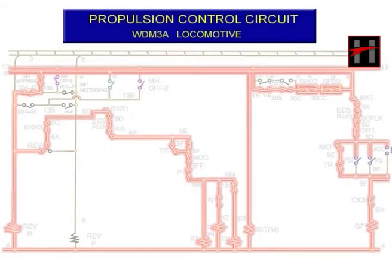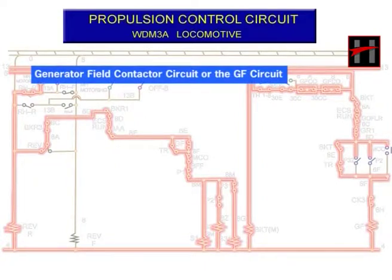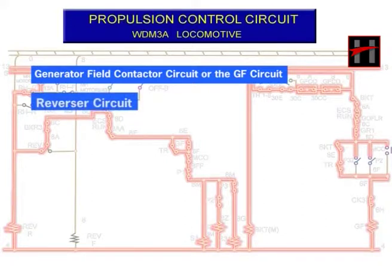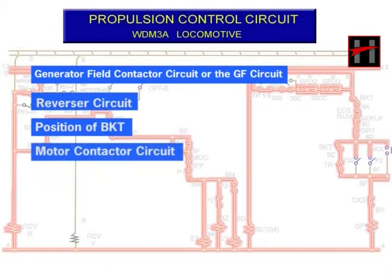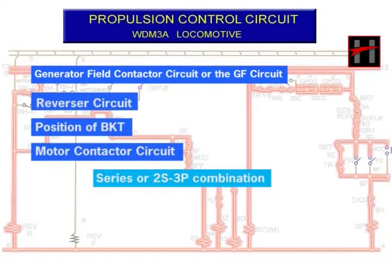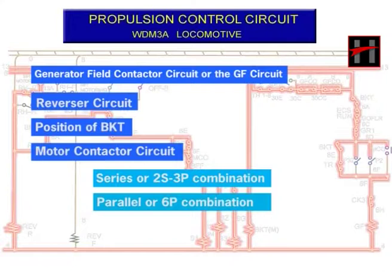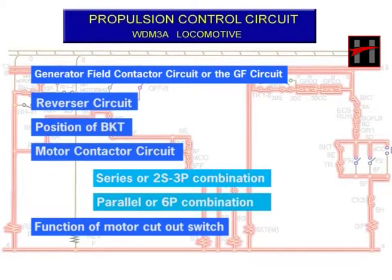The working of the propulsion control circuit will be explained under the following headings: A. Generator field contactor circuit or the GF circuit. B. Reverser circuit. C. Position of BKT. D. Motor contactor circuit in series or 2S3P combination and in parallel or 6P combination. E. Function of motor cutout switch.